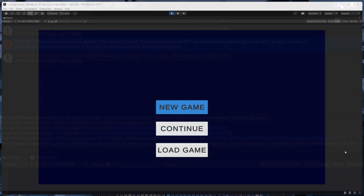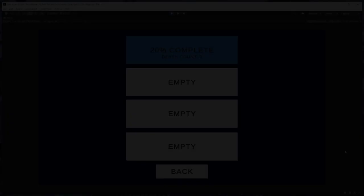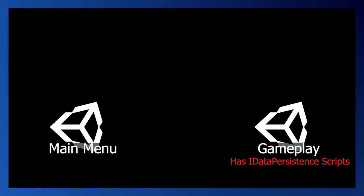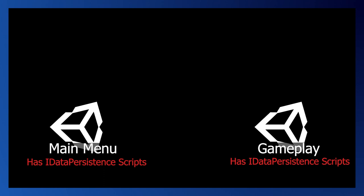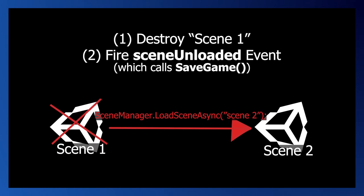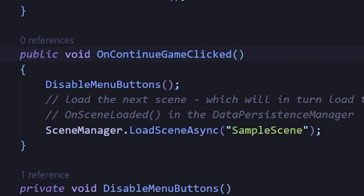This worked fine for what was shown in that video because our main menu scene didn't have any other scripts that needed to save or load data. But as you could imagine, if we want to transition from our gameplay scene to any other scene, or maybe we do want to persist some data in our main menu scene, we'll eventually run into this issue. I wouldn't recommend saving the game using the scene unloaded event because that event fires after the scene has been destroyed. Instead, we want to save the game before the scene gets destroyed.